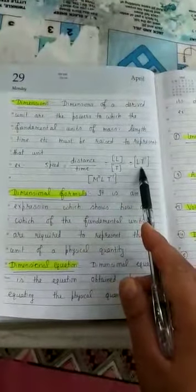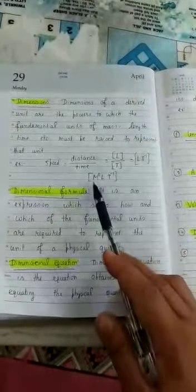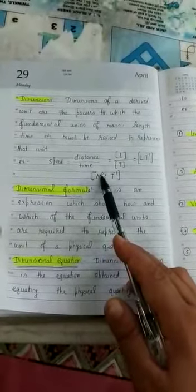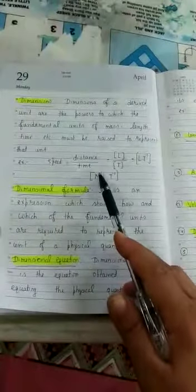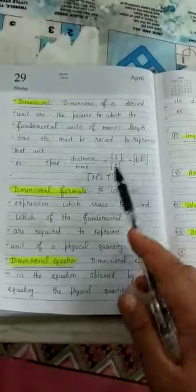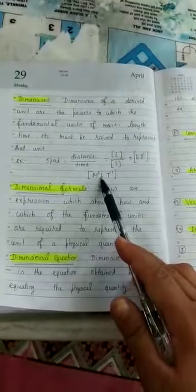Mass is not here. So if we want to include mass, this can be written as M^0, because we know any term to the power 0 means its value is 1. So this is the dimensions of speed.